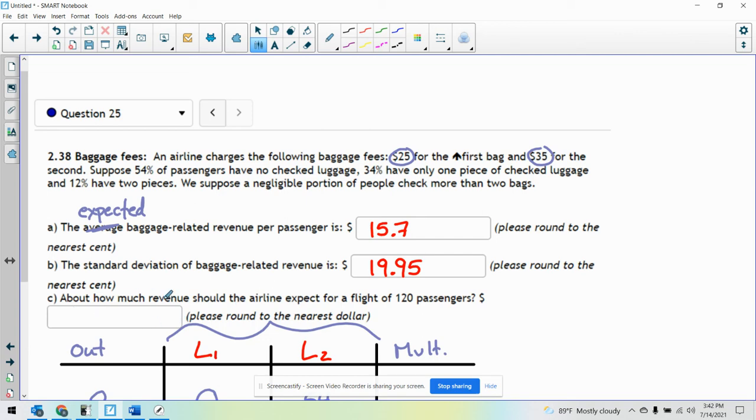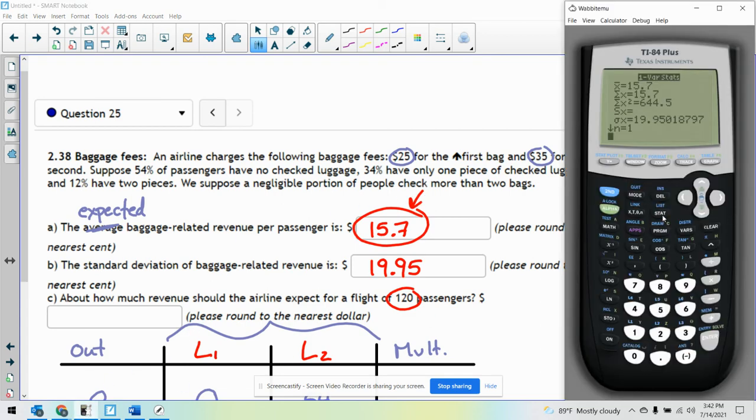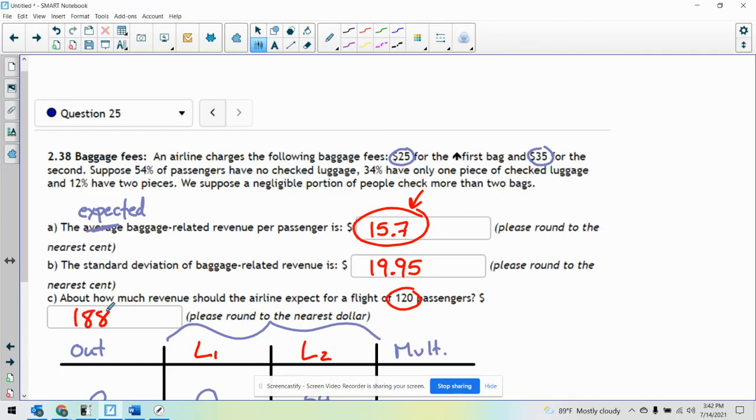So how much revenue should the airline expect for a flight of 120 passengers? Well, they're expecting the average baggage-related revenue per person is this. And they're saying, if I have 120 passengers, how much am I expected to make? Just multiply this by 120. 15.7 times 120 is $1,884. And there you go.